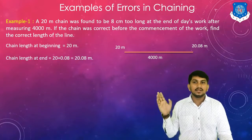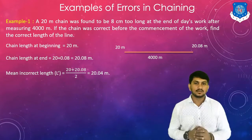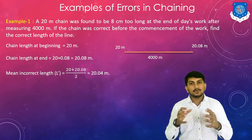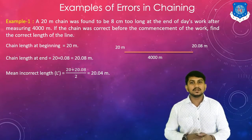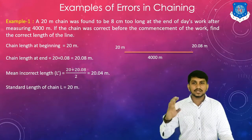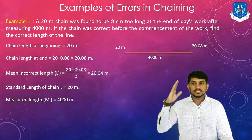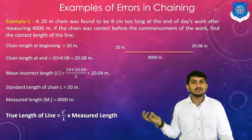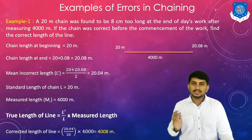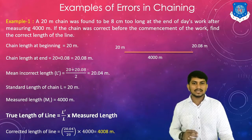Chain length at the beginning is 20 meters; chain length at the end is 20.08 meters. Since two measurements of the chain are taken — starting and ending — the mean incorrect length L' is found by averaging: L' = (20 + 20.08) / 2 = 20.04 meters. Standard length L = 20 meters. Measured length ML = 4,000 meters. Using the equation: TL = (L'/L) × ML = (20.04/20) × 4,000 = 4,008 meters.